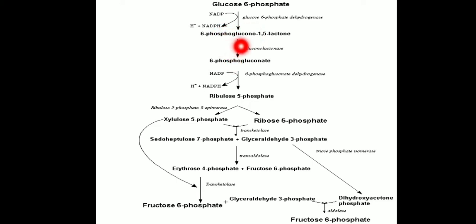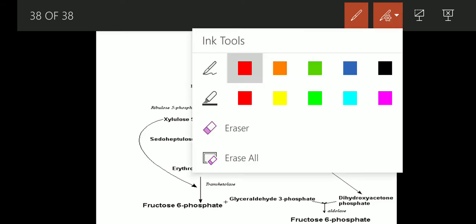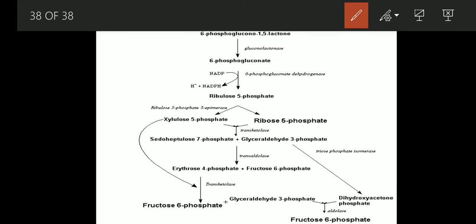This 6-phosphogluconolactone will convert into 6-phosphogluconate in the presence of gluconolactase. Then this will convert into ribulose 5-phosphate in the presence of 6-phosphogluconate dehydrogenase, and here again we get NADPH plus H positive. This completes the oxidative stage.